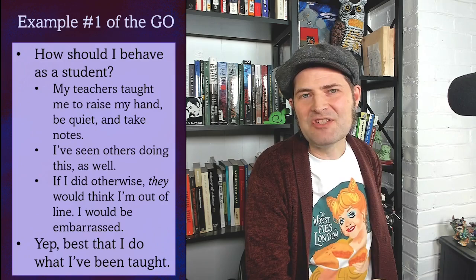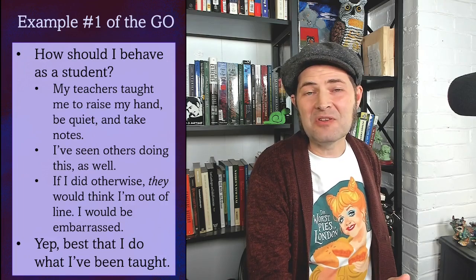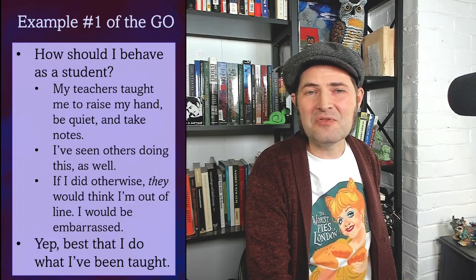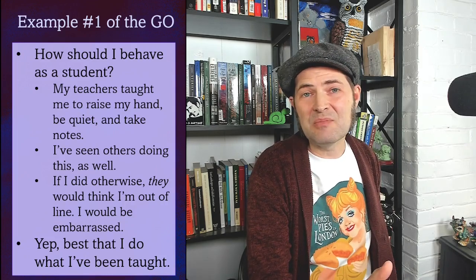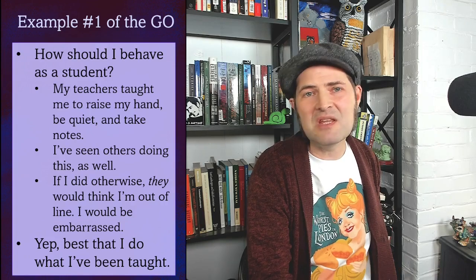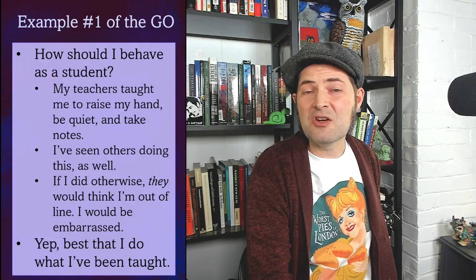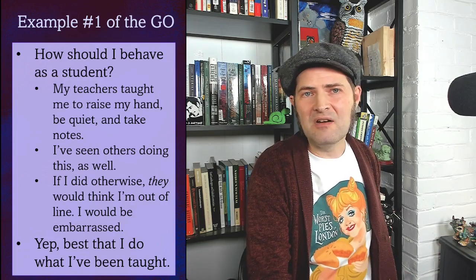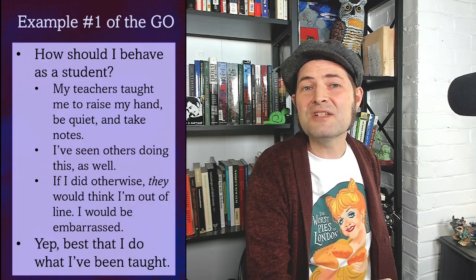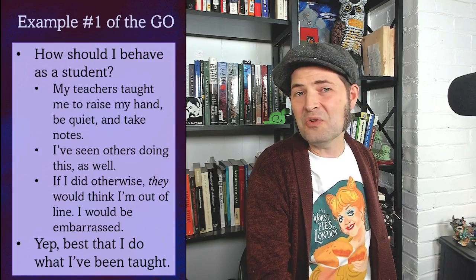Let's think about an example of the generalized other — how do we know how to be a student? All the interactions you've had throughout your life with other teachers, students, and so forth have taught you how to be a student. For me, I immediately think of Ms. Ledbetter in kindergarten, teaching me that I needed to raise my hand to speak and ask permission to go to the bathroom. Later, teachers added new ideas: take notes in class, come prepared with textbooks and materials, turn in things on time. Throughout, you're interacting with teachers that are teaching you how to be a student. Likewise, you've been watching the students around you and learning little things from them.